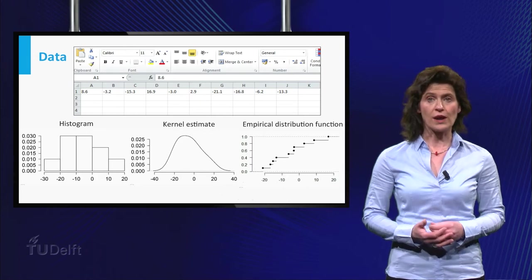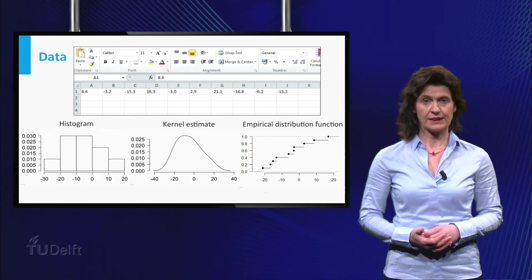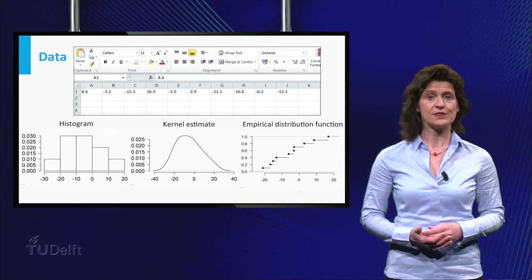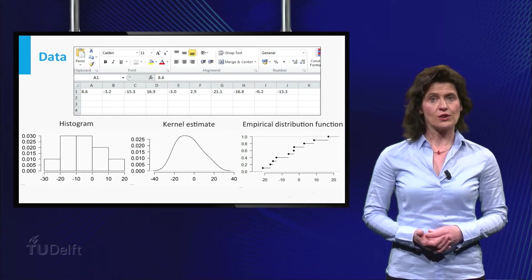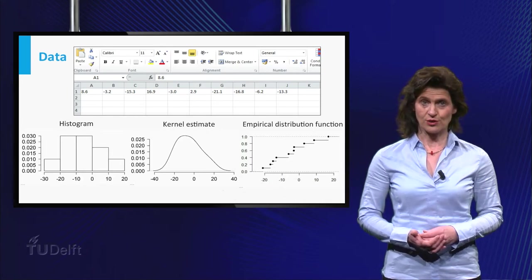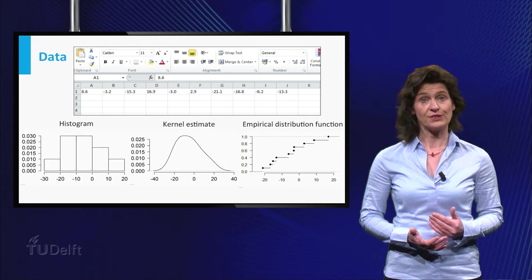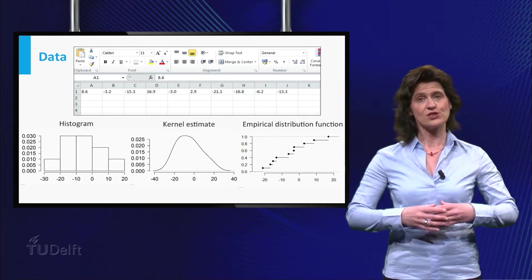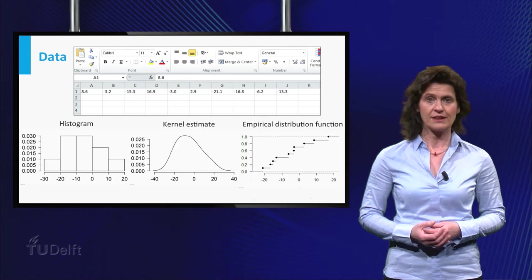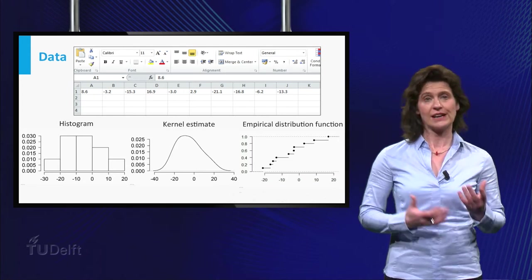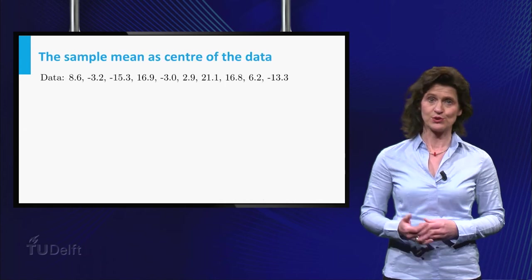We focus on one-dimensional or univariate data. In the graphs given here we visualize a set of 10 values. You can also give a numerical indication of the location of the bulk of the data, as well as an indication of the spread of the individual points around the center. Various choices can be made for these center and spread measures, as we will see.